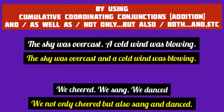We may combine simple sentences into a compound sentence by using cumulative coordinating conjunctions. These conjunctions denote addition — for example: and, as well as, not only...but also, both...and, etc. In the first example, the two simple sentences are: 'The sky was overcast' and 'A cold wind was blowing.' We combine these using the cumulative coordinating conjunction 'and.'